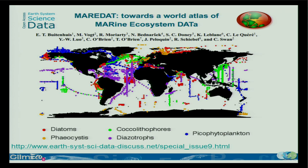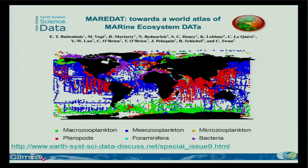MAREDAT came from the biogeochemical ocean model community. They got funding initially from the EROSIONS project and then from other projects. They are modelers who had need for observational data to parameterize and validate their models. So they went into a lot of work to fetch data from existing databases and create data products for diatoms, Phaeocystis, coccolithophores, nitrogen fixers, picophytoplankton, macrozooplankton, meso- and microzooplankton, pteropods, foraminifera, and bacteria — all pelagic. They collected the raw observations and did gridded products to match the grid of the World Ocean Atlas — a one-degree grid.